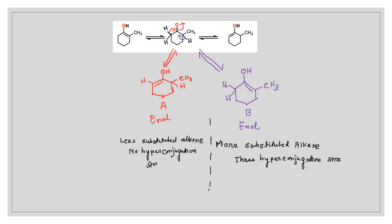In compound A, this is a less substituted alkene. There is no alpha carbon, no alpha hydrogens, that means no hyperconjugation structure.